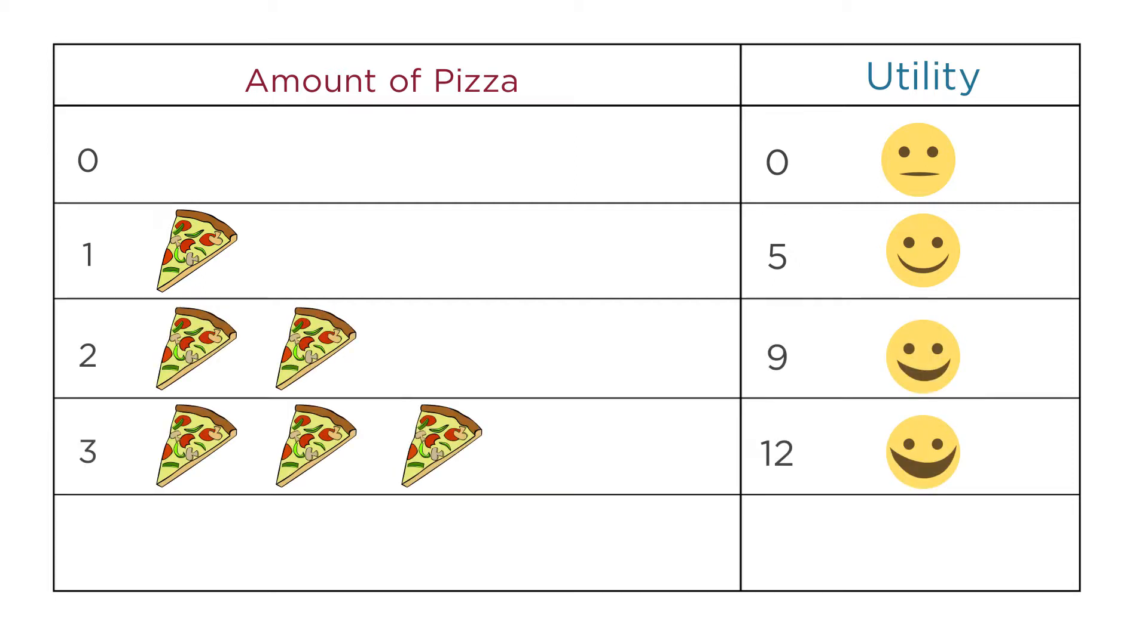To understand marginal utility better, let's walk through a simple example with numbers. This table shows you how much utility you get from different amounts of pizza. At zero slices of pizza, your utility is zero. You're not consuming anything. At one slice of pizza, your utility is five. At two slices it's nine, at three slices it's twelve, and at four slices it's thirteen.